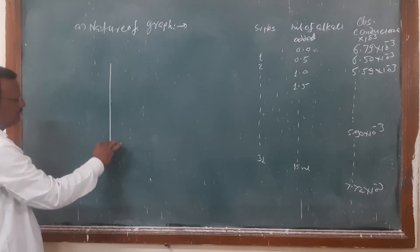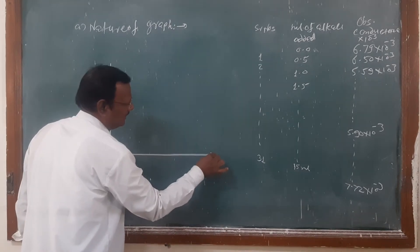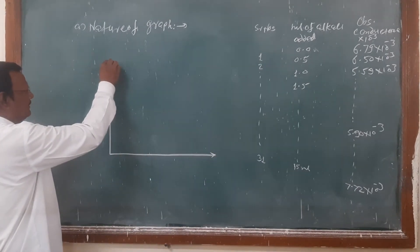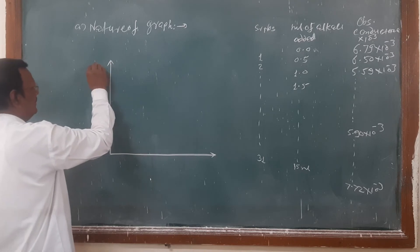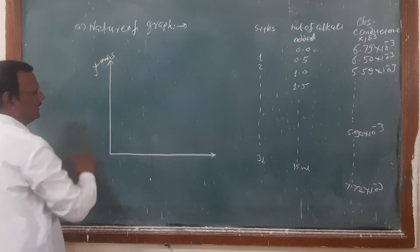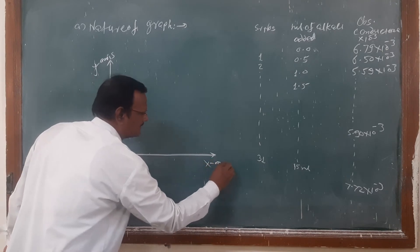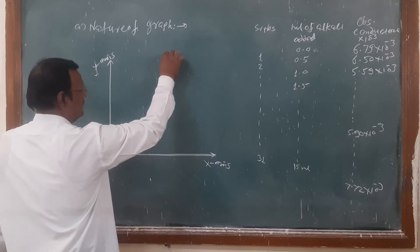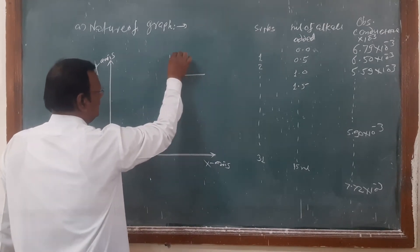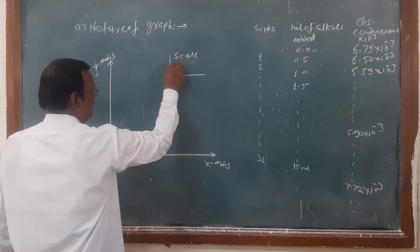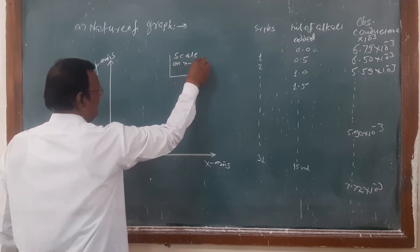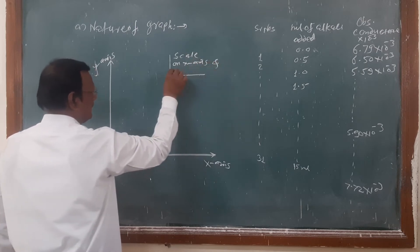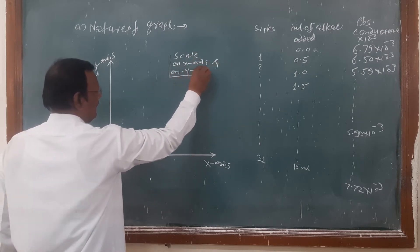Now we have to plot the nature of the graph from this observation table. First, we mention the y-axis and the x-axis. We need to decide the scale — the scale for the x-axis and the scale for the y-axis.